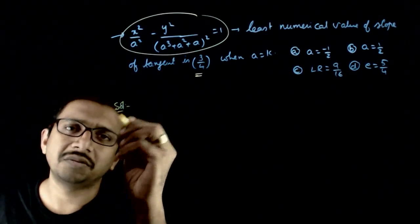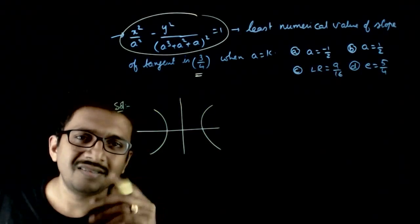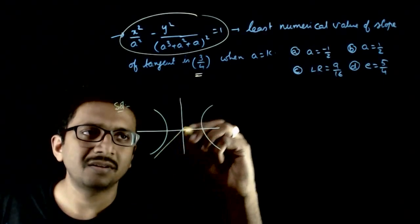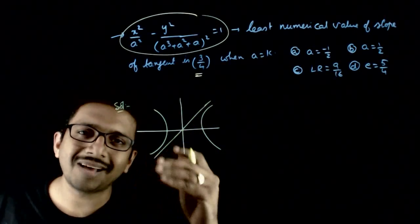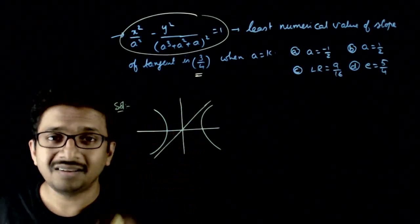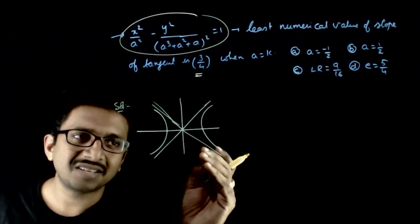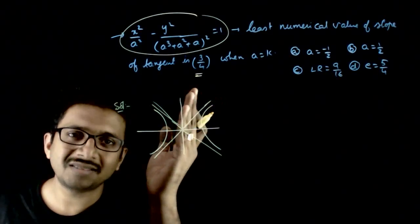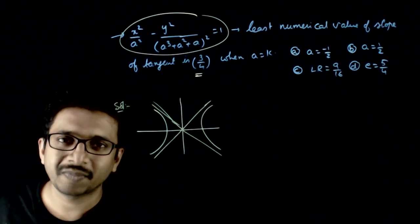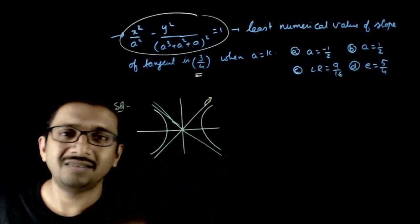So what is the concept involved in this question? The concept is: if you have a hyperbola, the least possible slope of the tangent happens when the tangent becomes the asymptote. All the other tangents of this hyperbola have slopes which are numerically higher than the asymptotes. You won't have any tangent which is flatter than these two tangents. So the least numerical value of slope is nothing but the slope of the asymptotes.